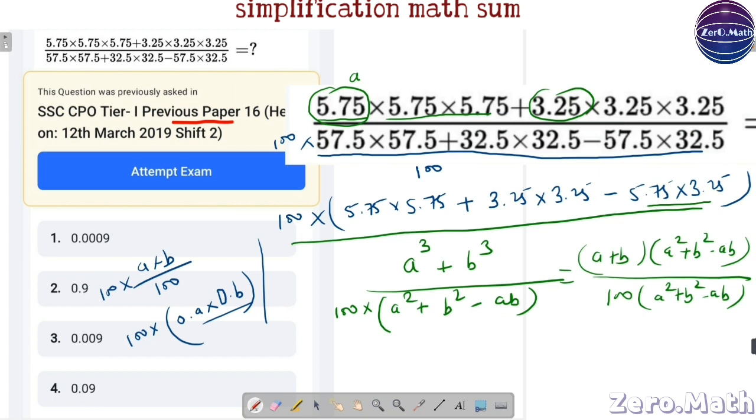Now, this a squared plus b squared minus ab will cancel it out. And eventually, our answer would be a plus b divided by 100.